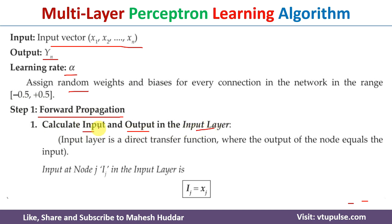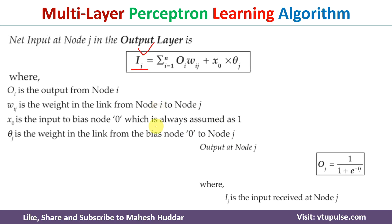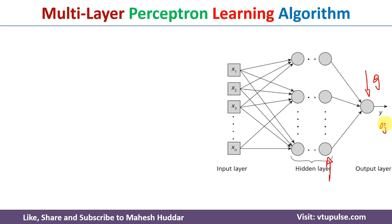In the first step of forward propagation, we calculate the input and output at the input layer. The input calculation is simply whatever input is given to the network, and the output of the input layer neuron uses a direct transfer function — meaning whatever the input is, the same value is transferred to the next layer. Once we calculate the net input, the next step is to calculate the output at that neuron using the activation function. Here the sigmoid activation function is used: output oj equals 1 divided by 1 plus e to the power of minus the net input ij. This gives us the output at the output layer neuron.